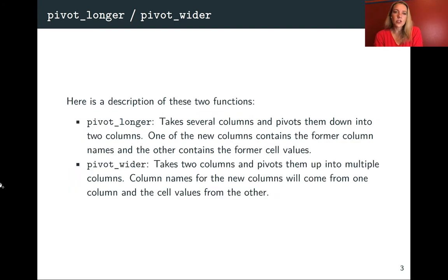So here's a description of these two. For pivot_longer, it's going to be what you use if you have that wide data, especially wide data that's got values you actually care about in the column names. It will take several columns, and you can specify which columns you want to pivot down, and it will pivot them down just to two. One of those final two will have what were originally the column names in them, and the other one will have what were originally the cell values in them.